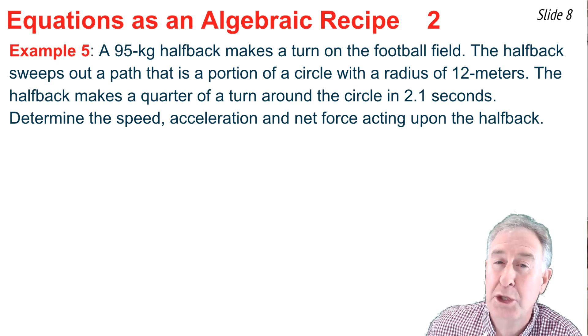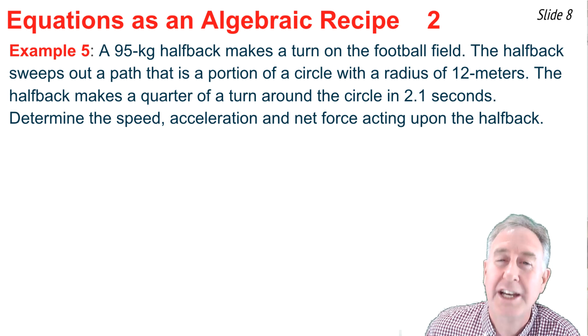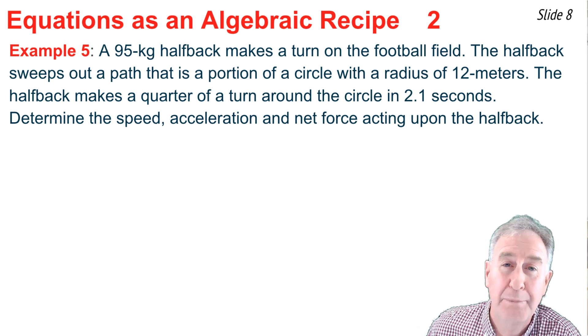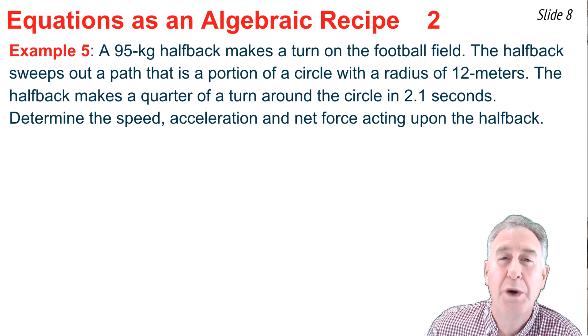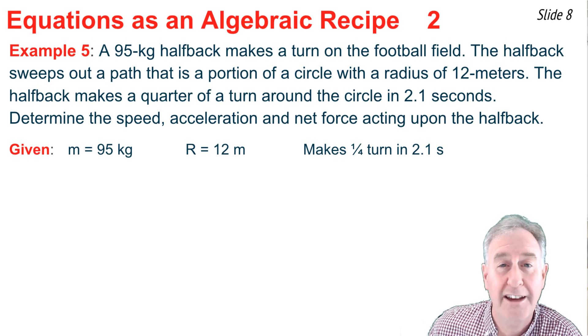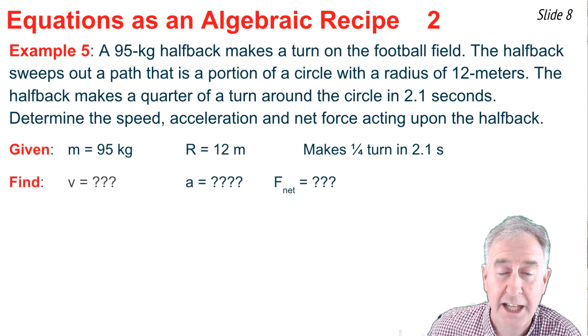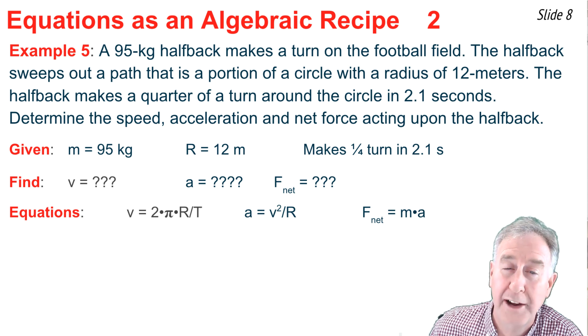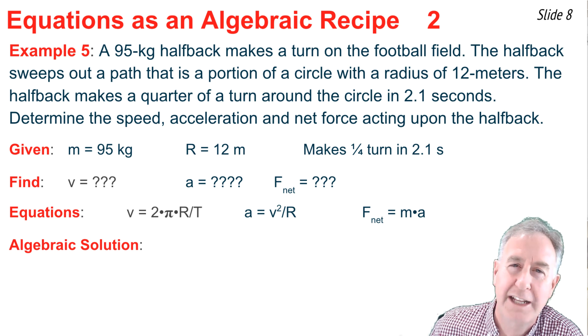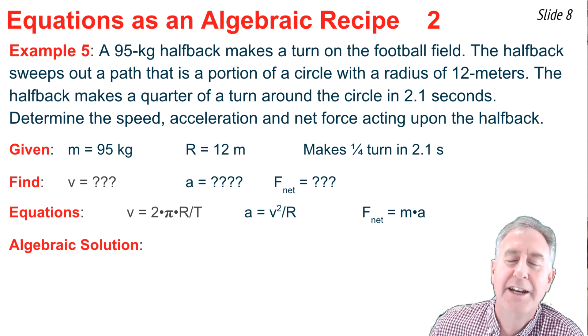If the halfback makes the quarter turn around the circle in 2.1 seconds, determine the speed, acceleration, and net force. Like any problem in physics, I'm going to begin by identifying what I know, what I'm looking for, and what my equations are. What I know is the mass of the halfback, and the radius of the turn, and the fact that the halfback makes a quarter of a turn around a circle in 2.1 seconds. And what I'm looking for is v, a, and f net. My equation for v is v equal 2πr over t. For acceleration, it's v squared divided by r, and for f net, it's m times a. Now for my solution.